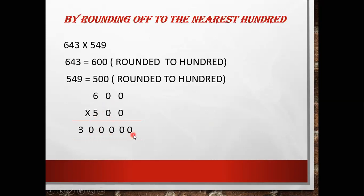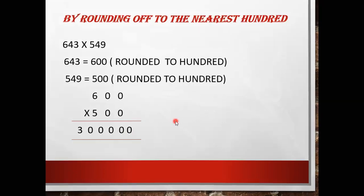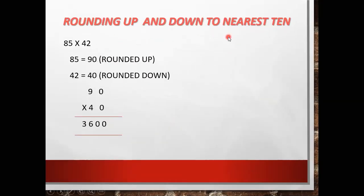Next, rounding up and down to the nearest 10. Here the example is 85 × 42. For 85, in the ones place we have 5, so it rounds up to 90. For 42, in the ones place we have 2, which is less than 5, so it rounds down to 40.